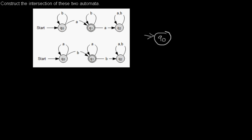Now we always have to look at what transitions are there in both automata. So in the first automaton we have an A transition from Q0 to Q1, and in the second automaton we have an A transition from Q0 to Q0.